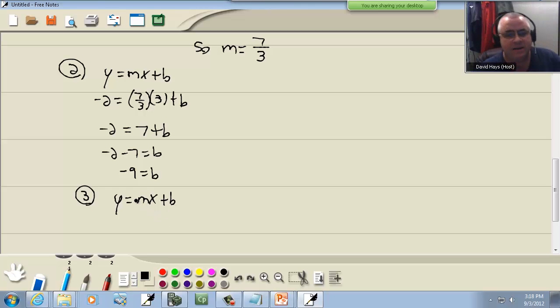Now step 3, to write your answer down. M from the first step we said was 7/3, so I got 7/3 X, and B from step 2 was negative 9. So our answer is Y equals 7/3 X minus 9.